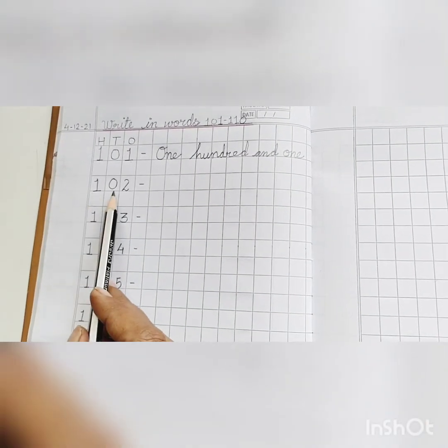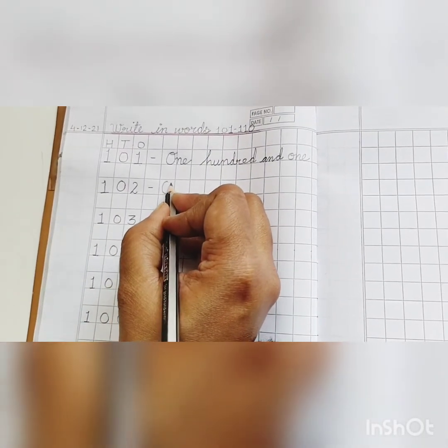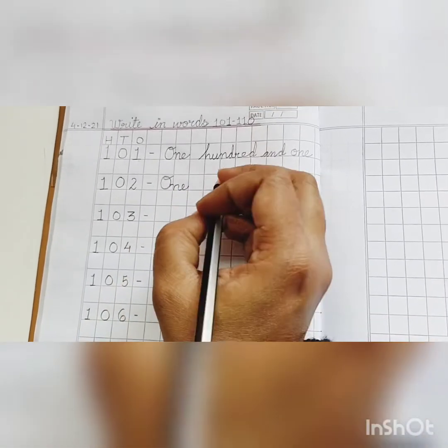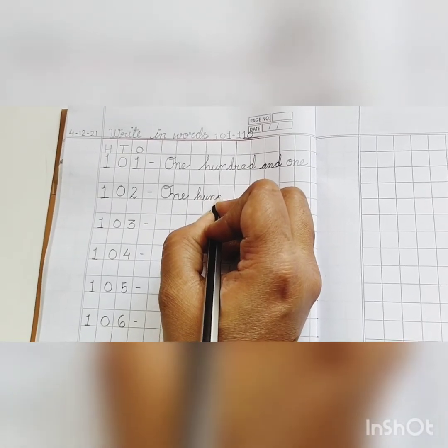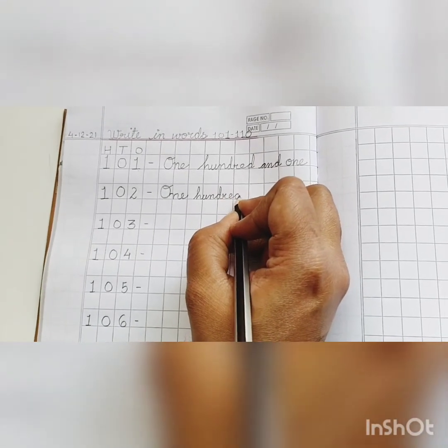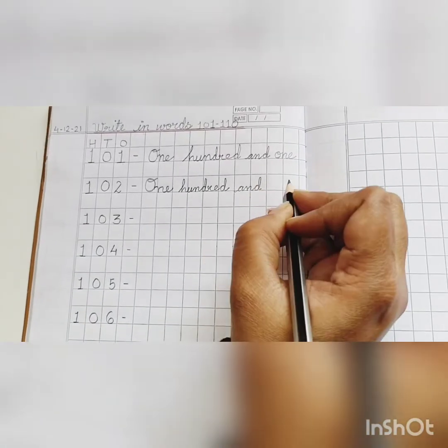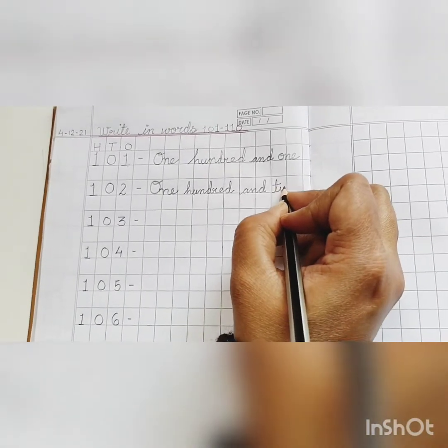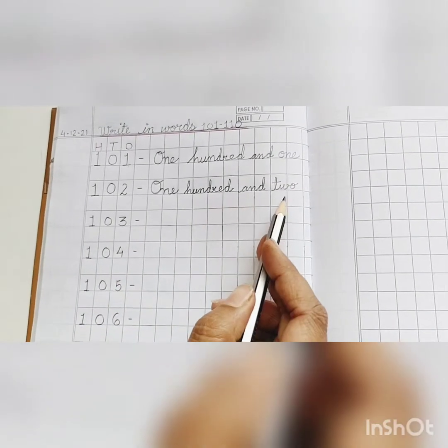Next, one hundred and two. Let's write. O-N-E, 1, H-U-N-D-R-E-D, 100, A-N-D and two. T-W-O, two. One hundred and two.